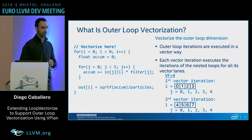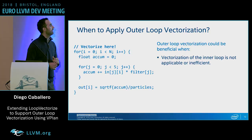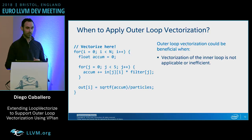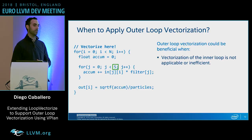When to apply outer loop vectorization? There are many factors. The first is when the inner loop is not vectorizable — for example, because of a dependency that prevents vectorization — or when it's inefficient. If the j-loop only has five iterations, vectorization there won't be very efficient, so we may want to try vectorizing the outer loop instead.